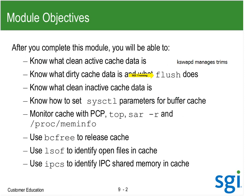KSwapD is going to trim this cache. I want to talk about inactive data, and I want to look at swappiness - sysctl vm.swappiness - and see if I can run an experiment there. There are some sysctl parameters, probably the most common ones a site will use. I also want to get into monitoring the cache with PCP, top, SAR dash-r, and proc meminfo.